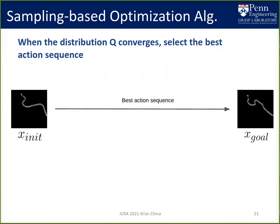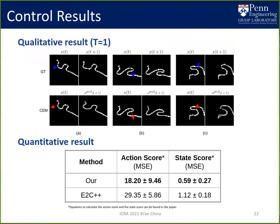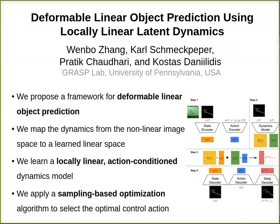Finally, we select the best action sequence with the lowest loss. We provide the control results above. By comparing CEM with ground truth, we find the sampled action is similar to the ground truth action, and the predicted state is similar to the ground truth state. Looking at the table, our method provides lower MSE for state and action than e-to-c plus plus. Thanks for listening.